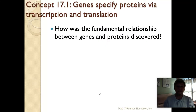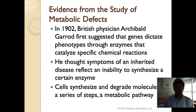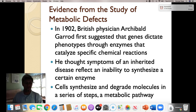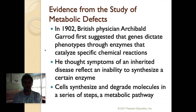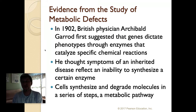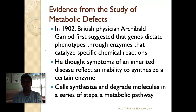The first question we have to ask is how was this relationship originally discovered — the relationship between the genes you carry and the proteins you produce. In 1902, Archibald Garrod first suggested that it was the genes that dictate what you look like, and it does so because of the enzymes you produce. He saw the connection between the genes you carry and the enzymes you make, and he assumed that anybody stricken with an inherited genetic disease had that disease because of their inability to produce certain kinds of enzymes.